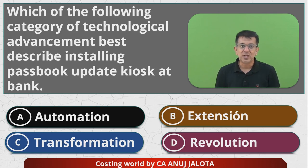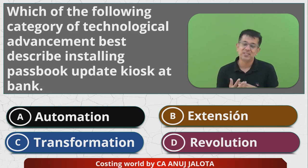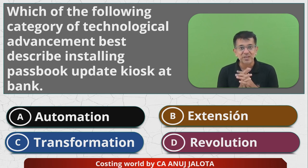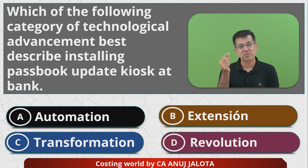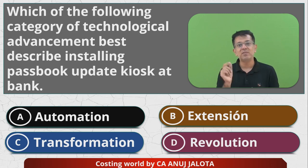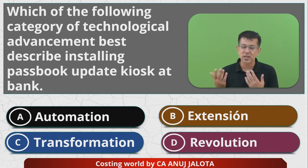Originally, when banking in India started — because my dad was in banking — he started as a passbook writer and retired as GM of Bank of India, having served 42 years. When he started, he was a passbook writer. Your bank account exists in the form of a manual book which you carry, and you'd always want to know your current balance, so you go to the bank, give your passbook to the writer, and he writes down whatever transactions have happened and the final balance, including interest and deductions.